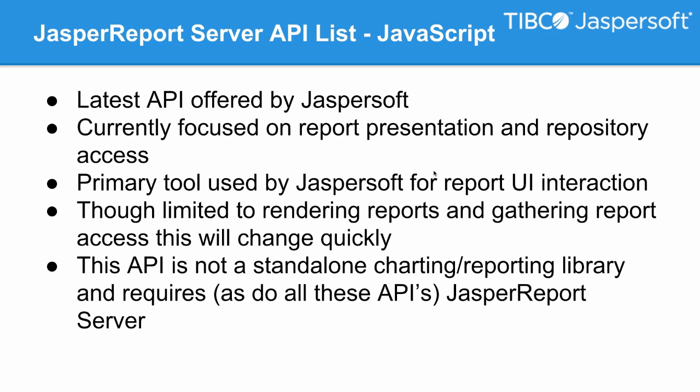Last on our list is the new JavaScript API called Visualize.js. This is the latest API offered by JasperSoft, and it's currently more focused around report presentation and giving you access into the repository of Jasper Report server. This is going to be the primary tool used by JasperSoft for report UI interaction. Though currently limited to rendering reports and gathering report access, more functionality will be added soon. It's important to note this API is not a standalone charting or reporting library — all of our APIs speak directly to Jasper Report server and need it to render reports inside your application.